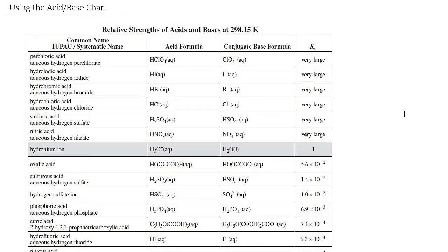You'll notice that on each line there is an acid and there is what's called the conjugate base. And what that is, it's the piece that's left over when you take the hydrogen ion off of the acid.